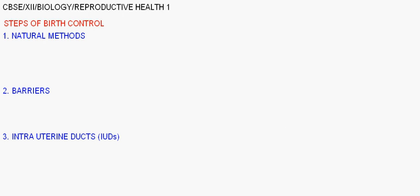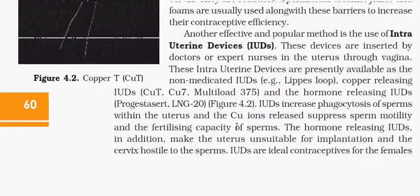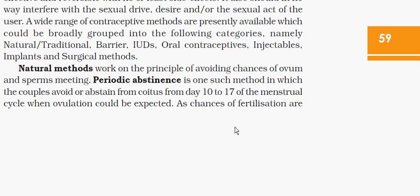Natural methods are those in which no chemical or physical substance is used. There are basically three types. The first one is periodic abstinence. During the menstrual cycle, couples either engage in or avoid coitus depending on the timing.